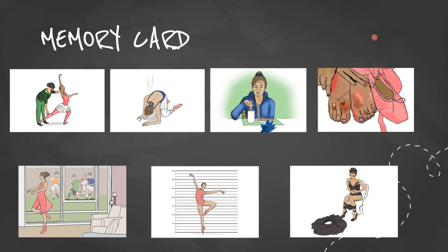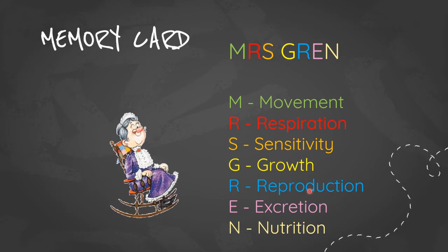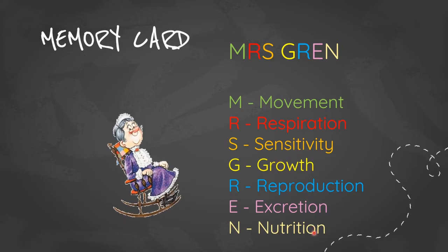So this was just a memory card for you guys to remember the various characteristics of living things: movement, respiration, nutrition, sensitivity, reproduction, growth, and excretion. You can also remember using Mrs. Gren who was the ballet teacher.